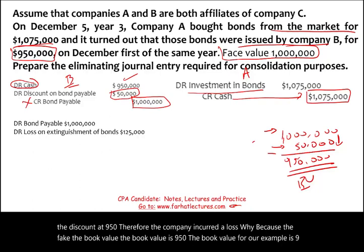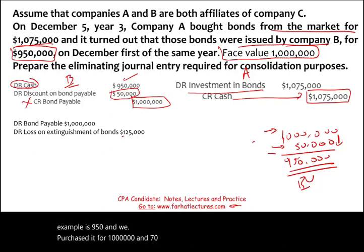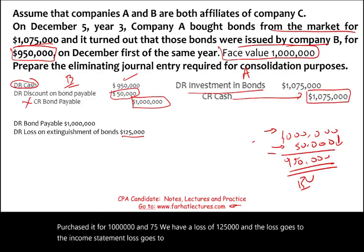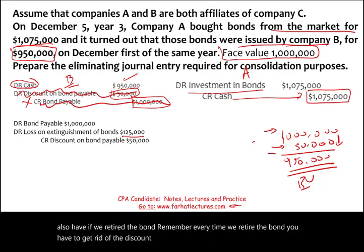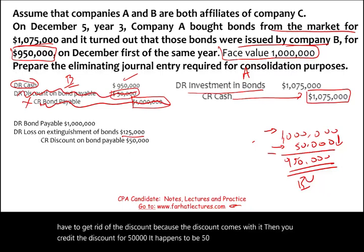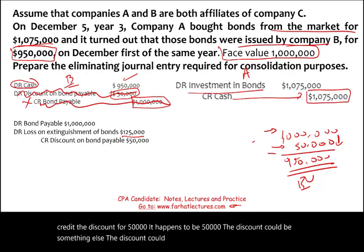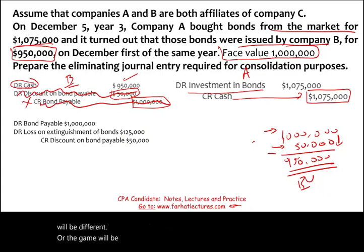We paid $1,075,000 while the bond was borrowed for $950,000, producing a $125,000 loss. When you retire the bond, you must also eliminate the discount — credit discount on bonds for $50,000. Then credit cash for $1,075,000. The credit to the discount removes it from the books along with the bond, and the loss or gain will vary depending on the specific discount or premium amount.